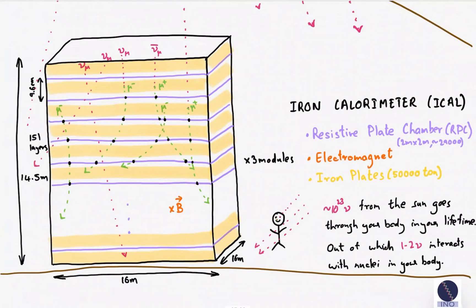Apart from being the passive detector, the iron plates serve one more role. They form the core of the electromagnet. The magnet will have a field of 1.5 tesla and will draw a current of around 1000 amperes.